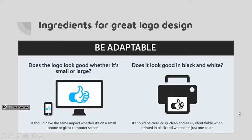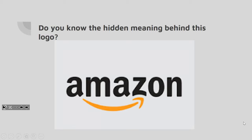Great logos are usually adaptable — you can see them really big on a screen or really small on a phone and they still look pretty much the same. You can glance at them and know what they are. Here's a fun one I learned today: the Amazon logo goes from A to Z — the arrow points from 'a' to 'z,' meaning they have everything from A to Z. I also think it might be a smiley face, but I need to confirm that one.